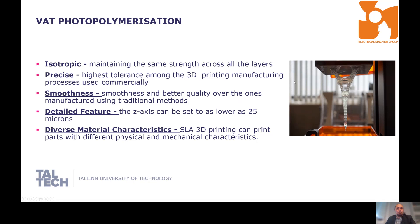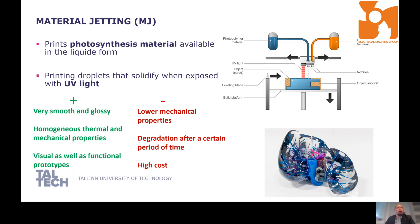The next one is material jetting — basically similar to the previous printer. The difference is that the liquid is spread onto the build platform where it is hardened with UV light. It allows you to produce very complex shaped things with different materials and even colors. But again it is limited to materials that harden with UV light, and you can't use it to print electromagnetic components.